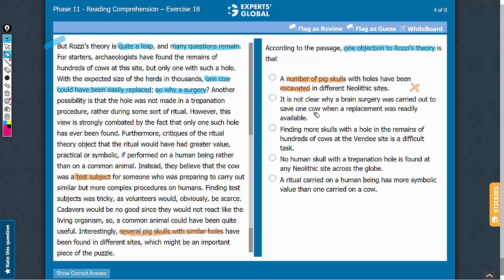Answer choice B: It is not clear why a brain surgery was carried out when a replacement was readily available. Yes, this is exactly the point the passage mentions here. If one cow could have been easily replaced, why conduct a surgery? So this is a good answer choice. Let's keep it on hold.